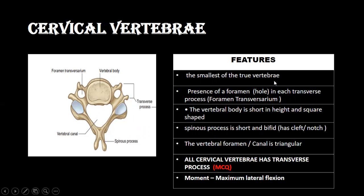The cervical vertebra is the smallest because it is present just beneath the skull — it is the starting point of our vertebral column. You can see two transverse processes, and between them there is a hole or foramen. This foramen is known as the foramen transversarium, because it is present between the two transverse processes.